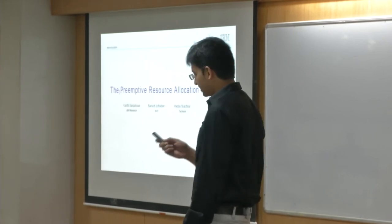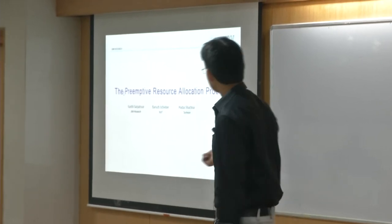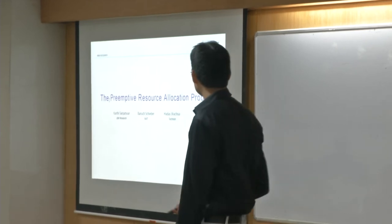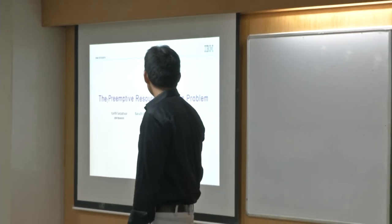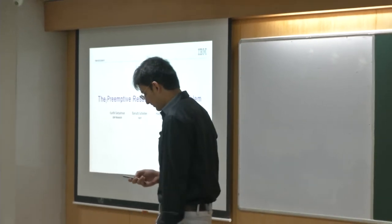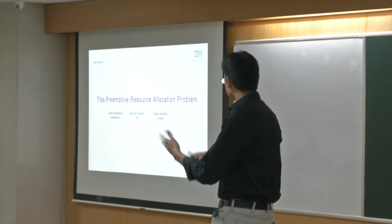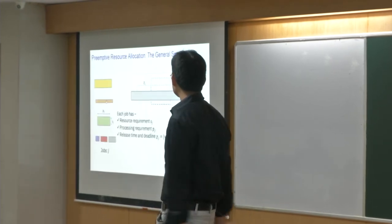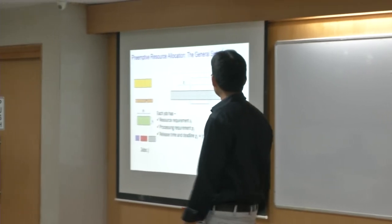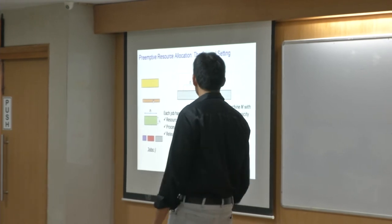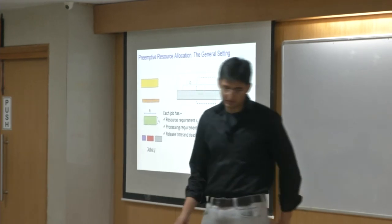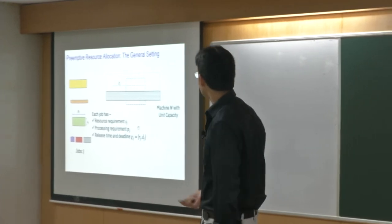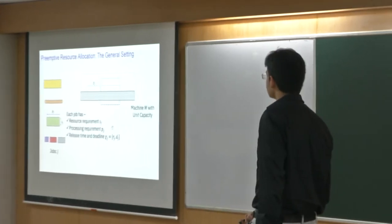This is about the pre-emptive version of the classic resource allocation problem, done by Kanti Sarpatwar, Baruk Shibar, and Hadash Satchnai. So let's get into the basic definitions. It's a resource allocation problem, so we clearly have jobs and machines, and our task is to schedule these jobs on the machines.